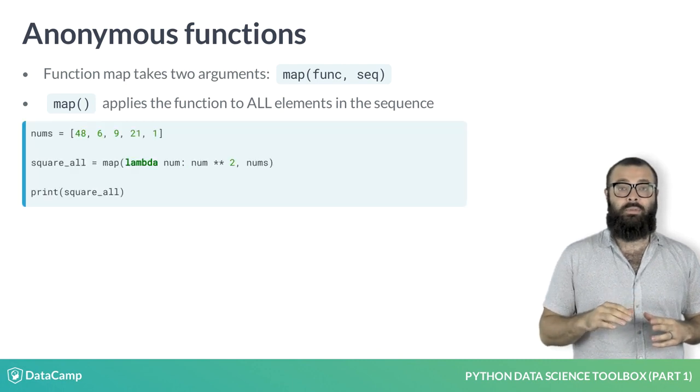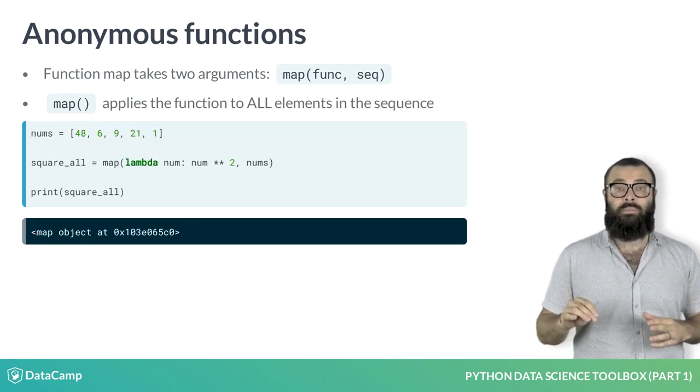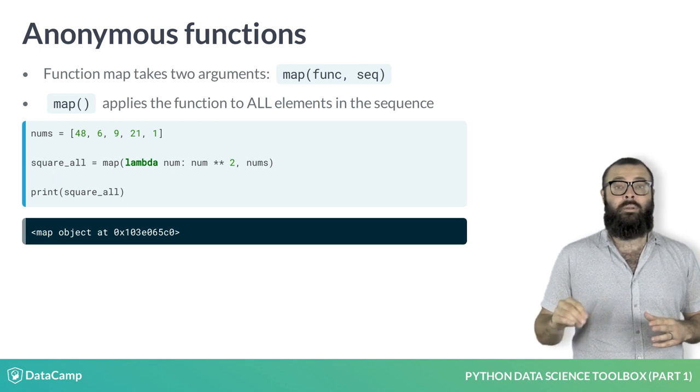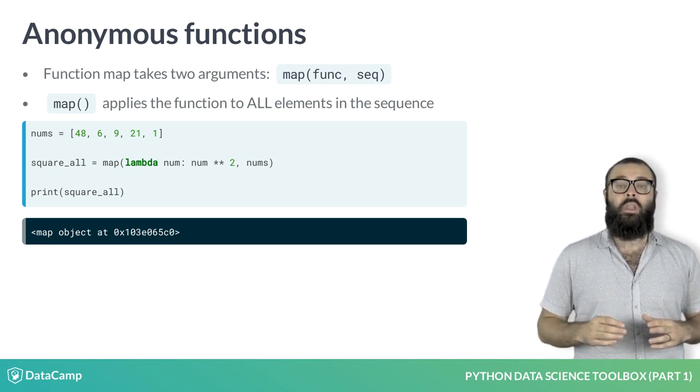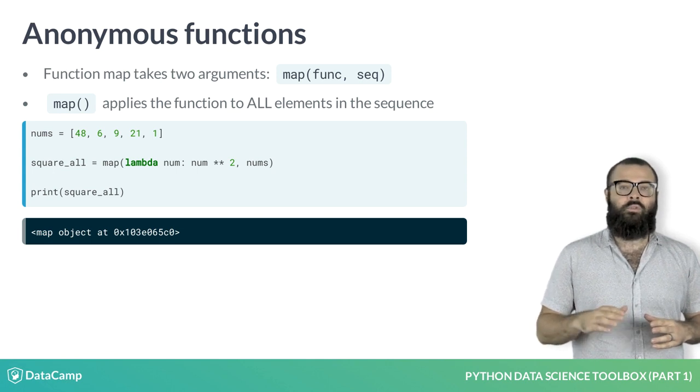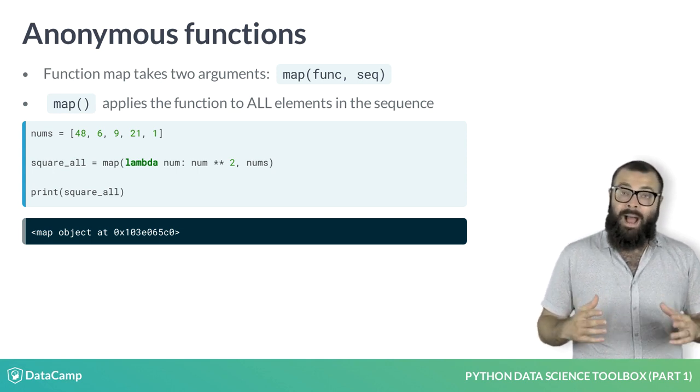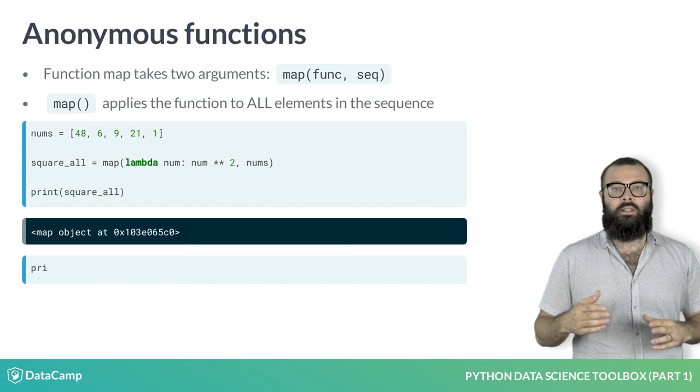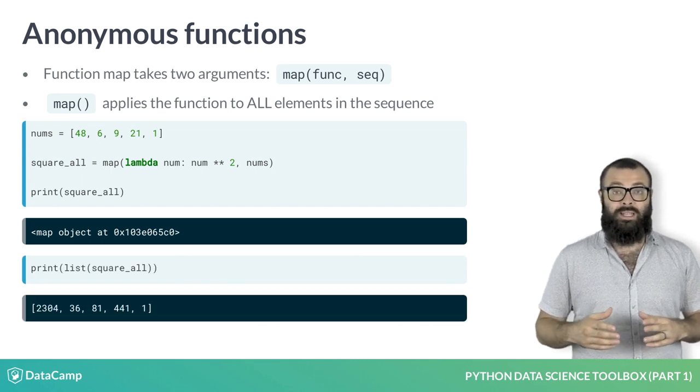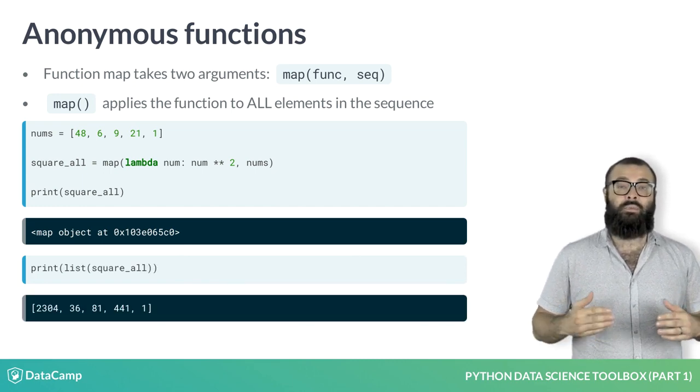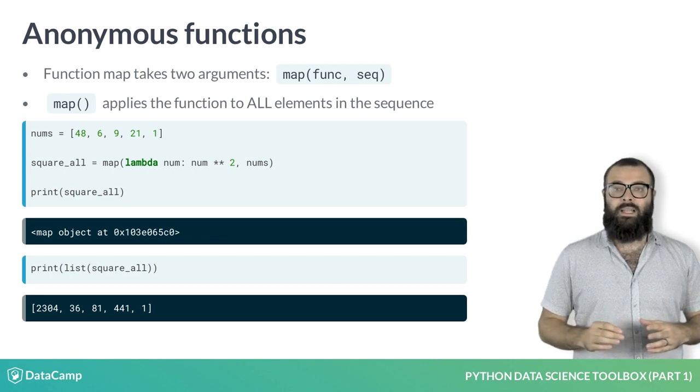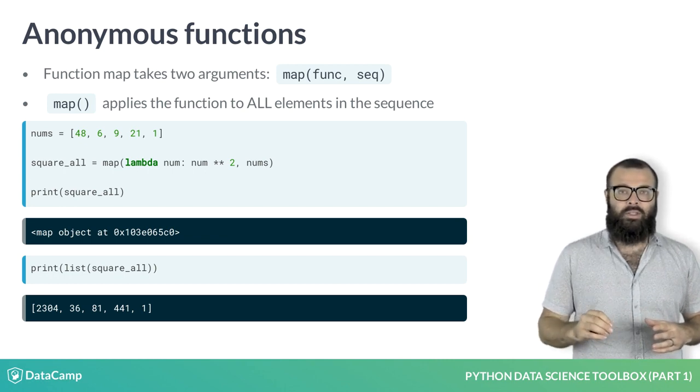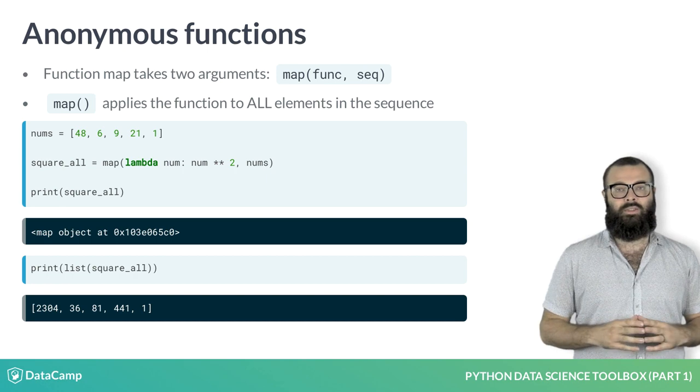In this example, we use map on a lambda function that squares all elements of a list, and will store the results in square all. Printing square all reveals that it is actually a map object, so to see what it contains, we use the function list to turn it into a list, and print the results to the shell. As expected, it's a list containing the squares of the elements in the original list.